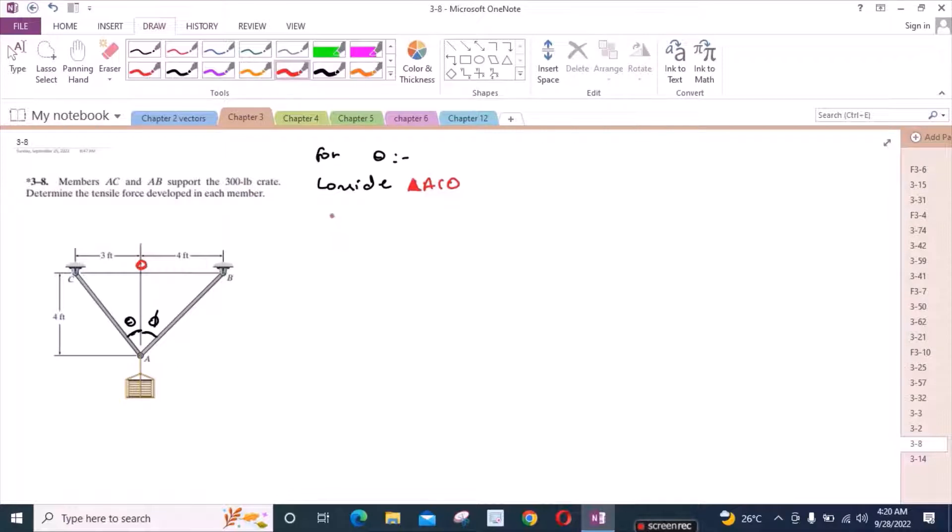We can apply the ratio of tan theta, which is equal to the perpendicular, which is 3, divided by the adjacent, which is 4. So theta is equal to 36.86 degrees.